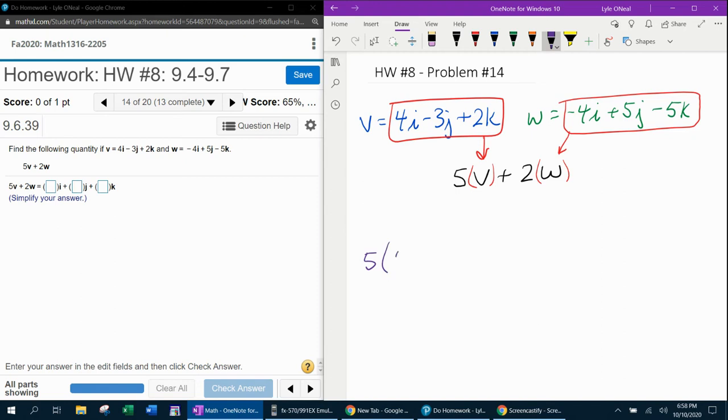So that's going to be 5 times 4I minus 3J plus 2K plus 2 times negative 4I plus 5J minus 5K.